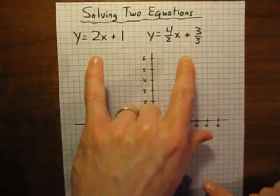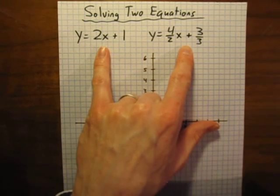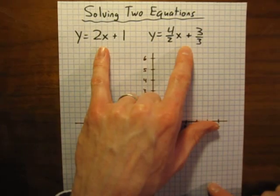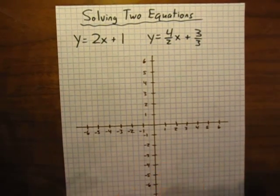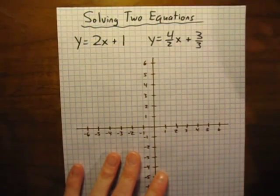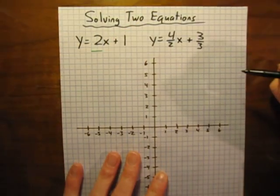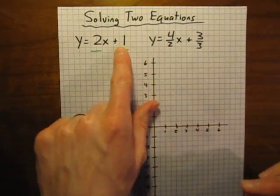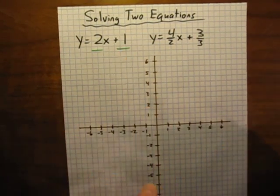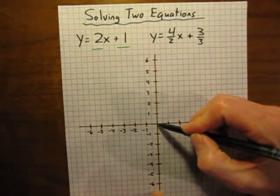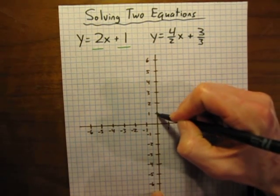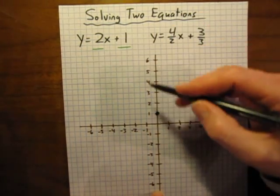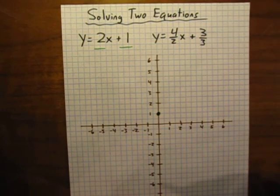Just like any other pair of equations that we're trying to solve, if we're doing this by graphing, let's just start with this one over here. We notice this is in slope-intercept form, the two is our slope, the one is our y-intercept, so we'll start with our y-intercept. We go to our y-axis, we go one unit up the y-axis because our y-intercept is one, and that will be our starting point.